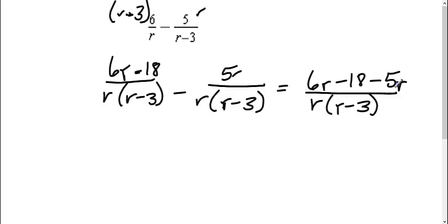Okay, now that it's all over the same common denominator, I can combine my like terms. I have 6r and minus 5r is 1r. And I still have that minus 18 all over r times r minus 3.